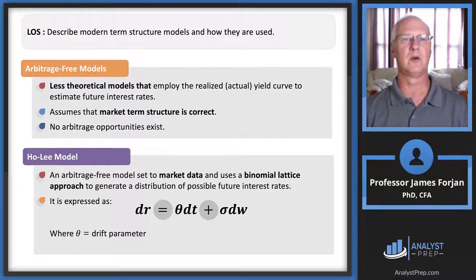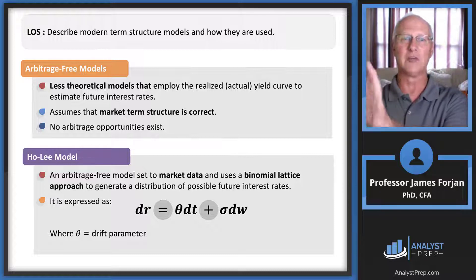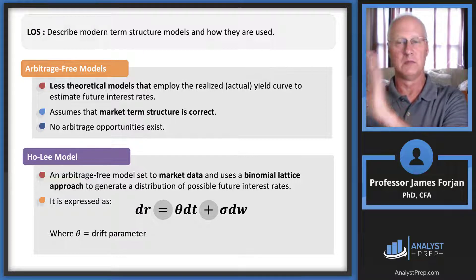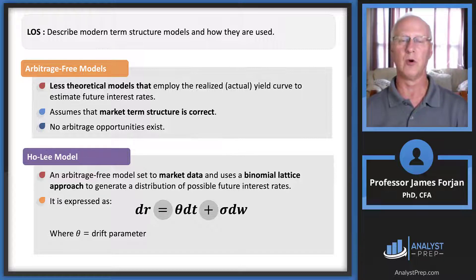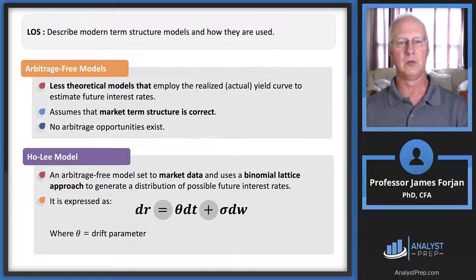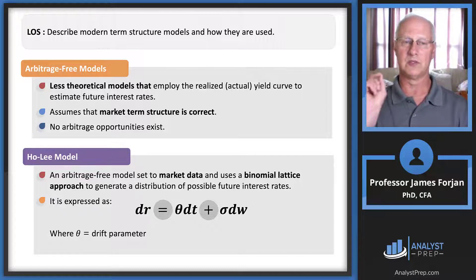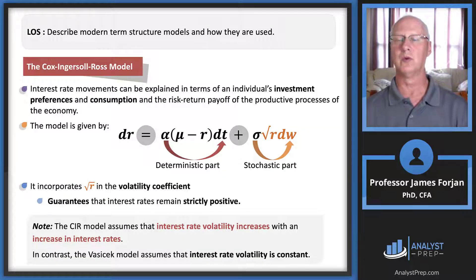Arbitrage-free models use actual market data — specifically the current yield curve — to estimate future interest rates, with no arbitrage opportunities embedded. The Ho-Lee model adds a drift parameter theta to the Vasicek-style framework, allowing the interest rate to drift upward or downward over a small increment of time, while also adding a stochastic component. Note that the Ho-Lee model does not include a square root of r term.